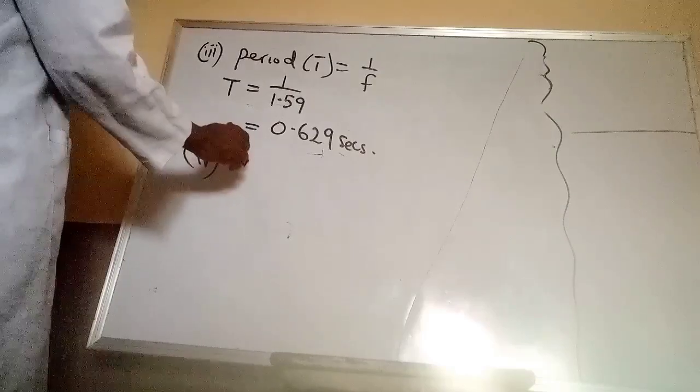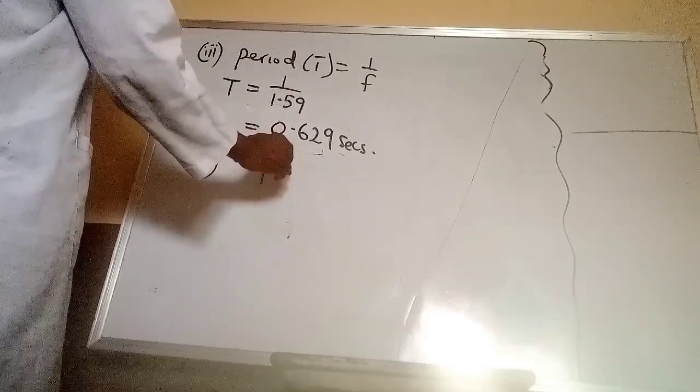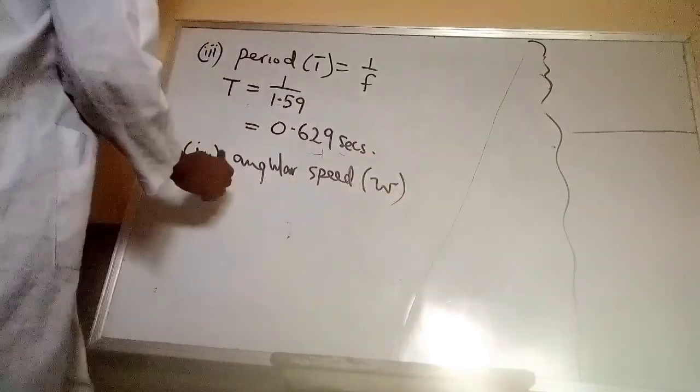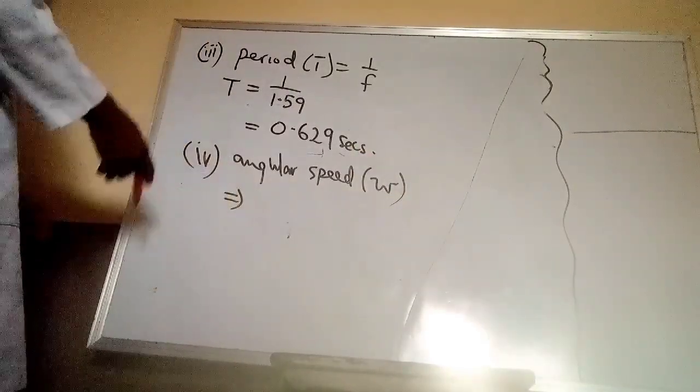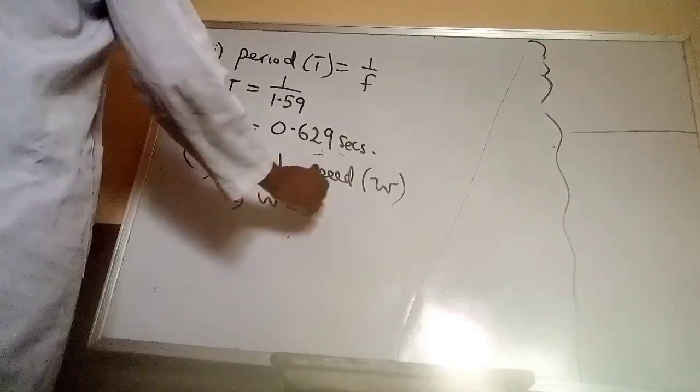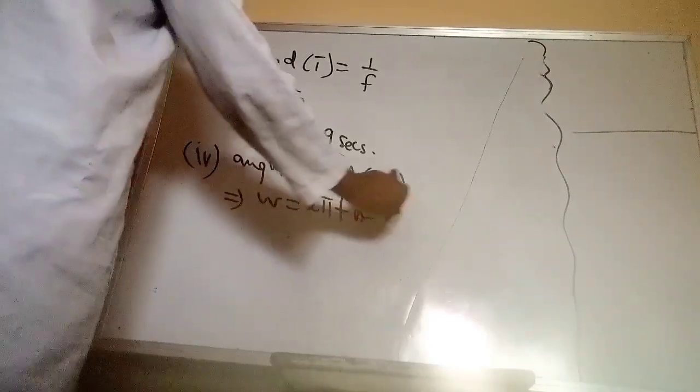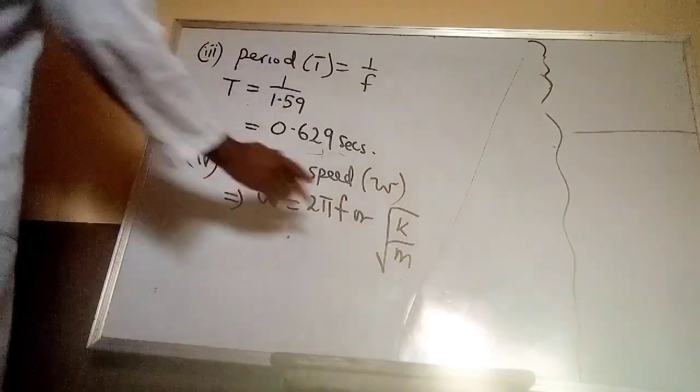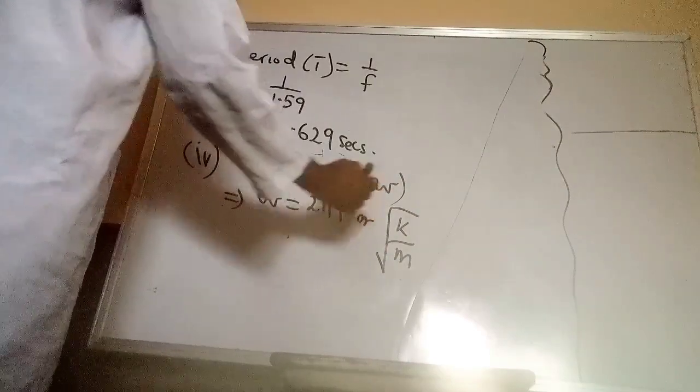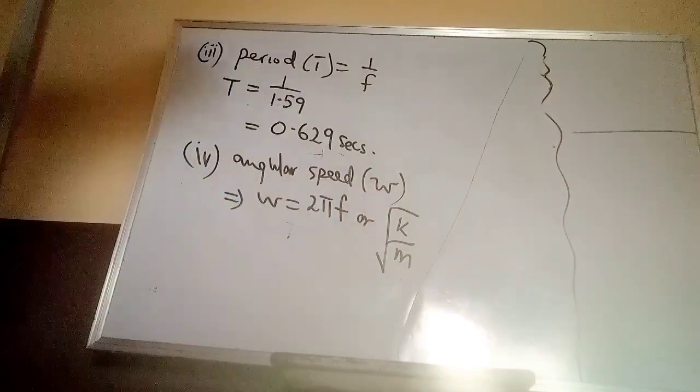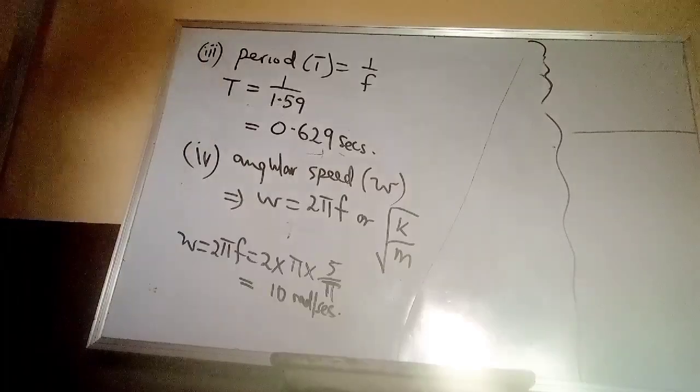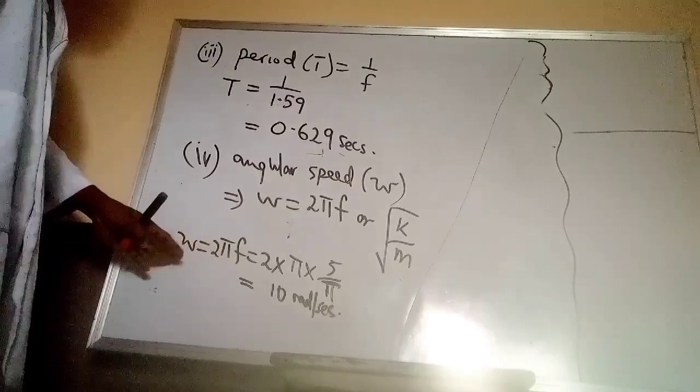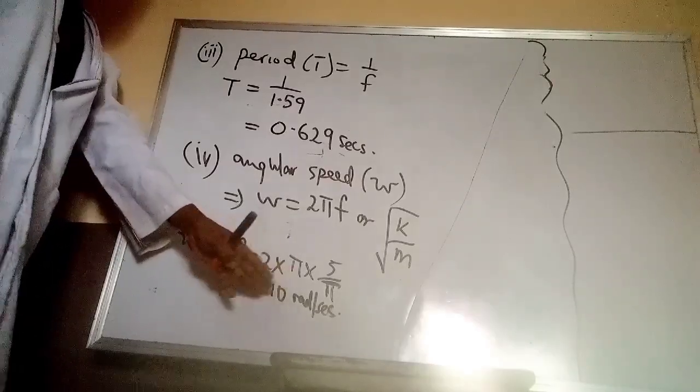The last question, which is number 4, we are asked to find the angular velocity or angular speed, which is this. Remember, I told you that we have this equals to 2 pi f or square root of k over m. Whichever one we use, we are going to get the same answer. Let's try it and see. Now, using 2 pi f, the angular speed will give 10 radians per second.